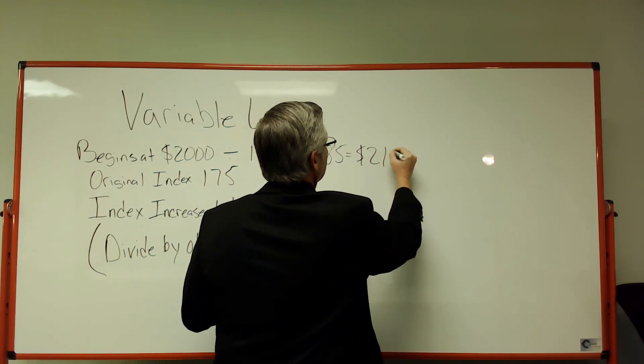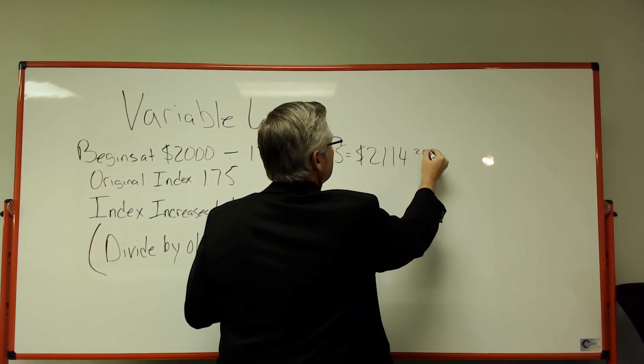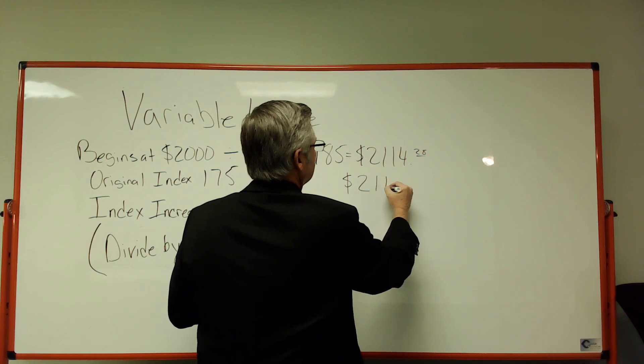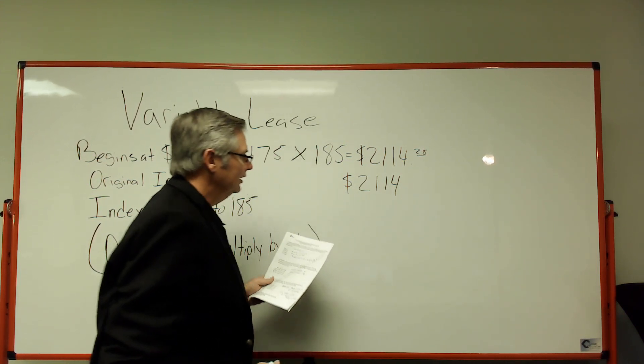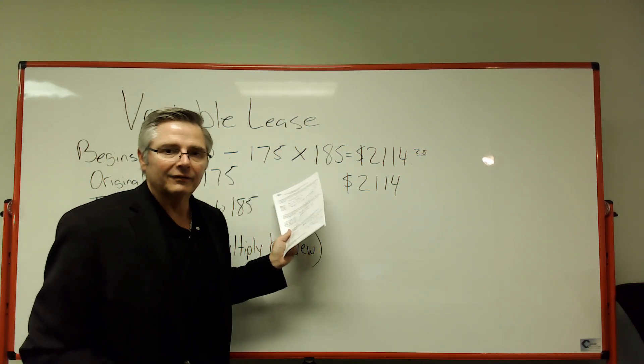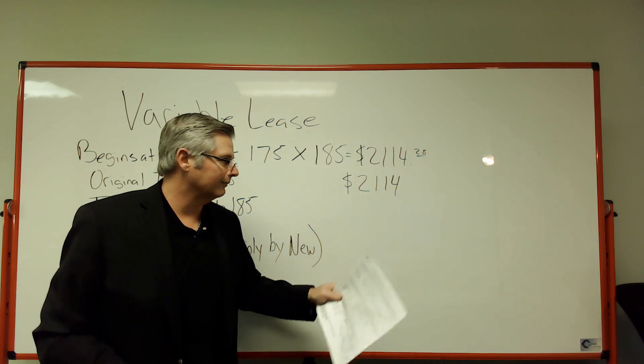$2114.28, and you can knock that 28 cents off. So the answer is $2114. The rent started at $2000 with an index of 175. The index increased to 185, and now the rent is $2114. So it went up.